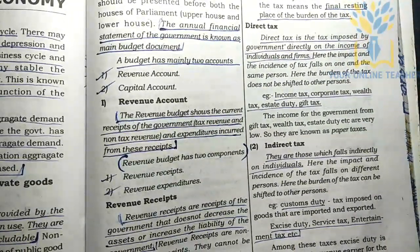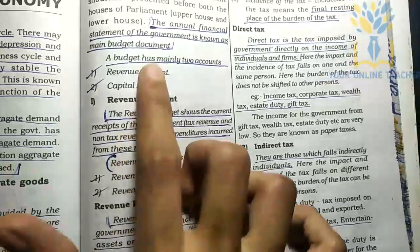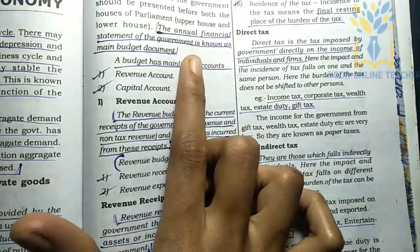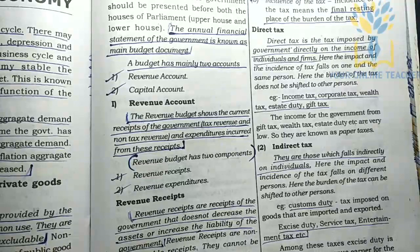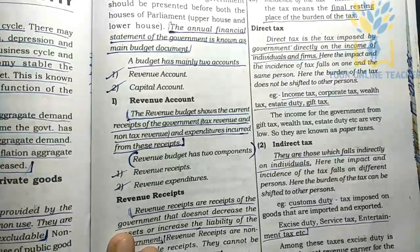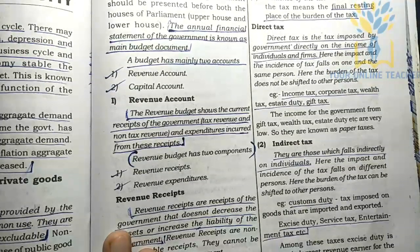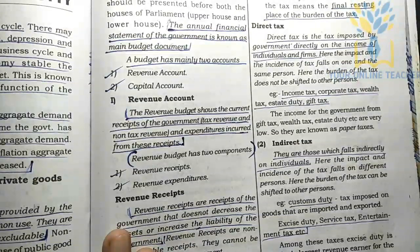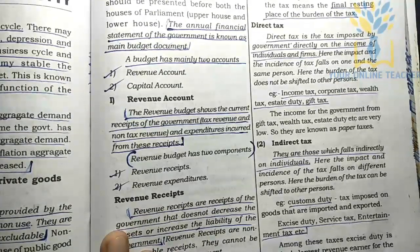The government budget is the annual financial statement of the government. This main budget document has two accounts: the revenue account and the capital account.